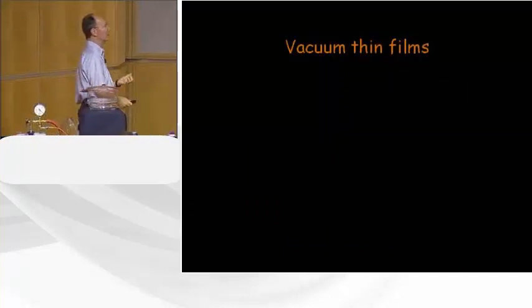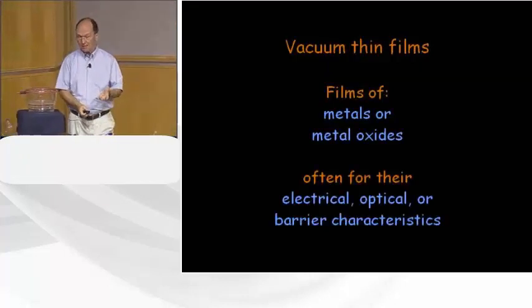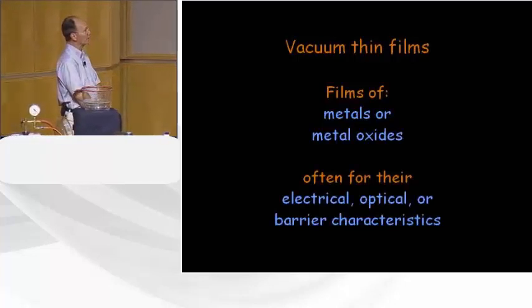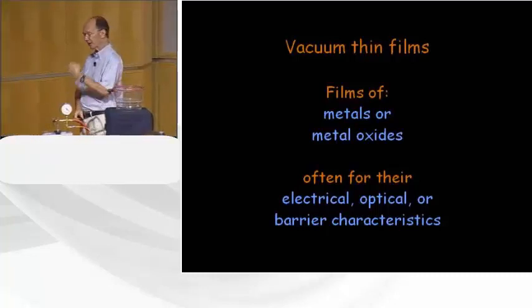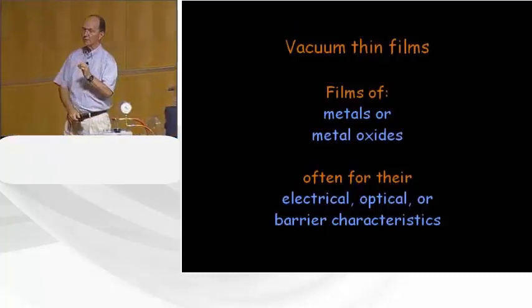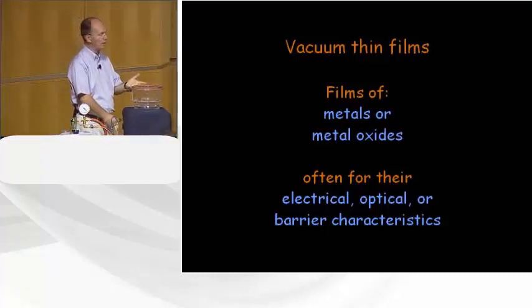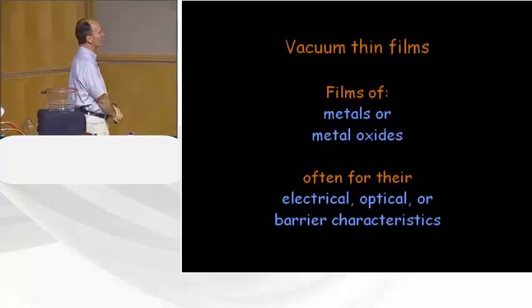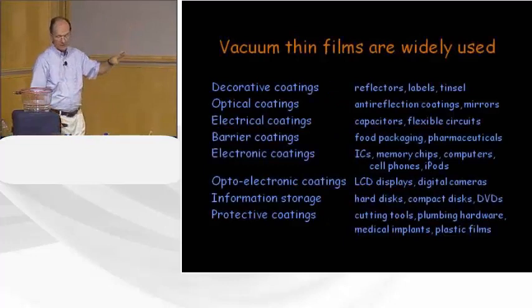Vacuum thin films: we make films of metals or metal oxides for their electrical, optical, and barrier characteristics. Historically, metals were more important; these days metal oxides are also very important. These vacuum-deposited films are very thin — we preserve the mechanical strength of the substrate and adjust the electrical, optical, or barrier characteristics.